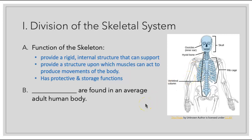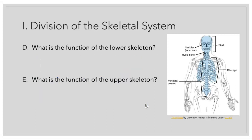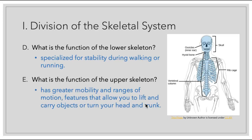As far as the total bones we have in our body, on average we have 206 bones in an adult body. The function of our lower skeleton is to create stability for when we walk and run. The function of the upper skeleton would be for us to have greater mobility and ranges of motion, and to have features that allow us to lift and carry objects and be able to turn our head and trunk.